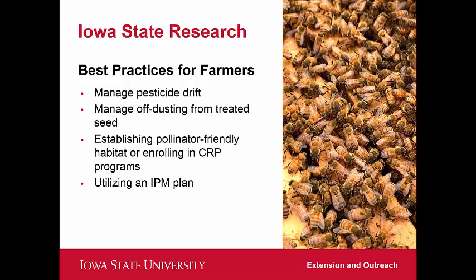For farmers, we're also talking about establishing pollinator habitat, enrolling in CRP programs if they're interested in taking land out of production, and utilizing an integrated pest management plan. Recognizing that it might be cheaper to calculate a population threshold than to invest in more insecticides after seeing one pest.